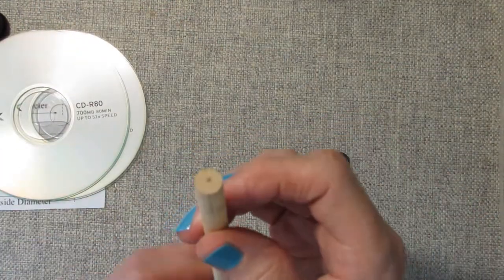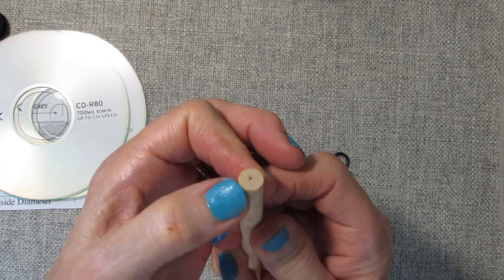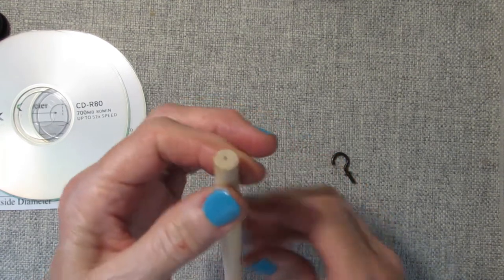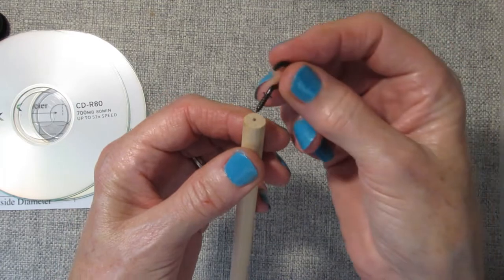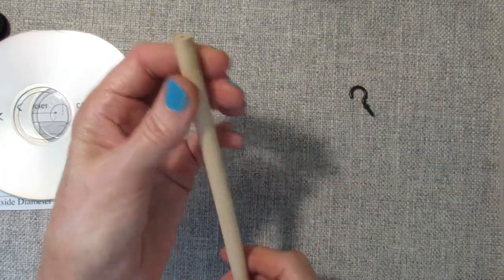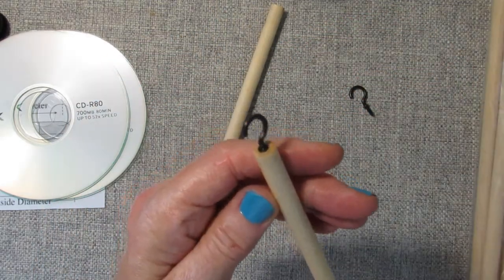So the first thing you need to do is probably pre-drill, which would make it a lot easier, a tiny hole on one end, and that's where you're going to insert your cup hook. There you go.